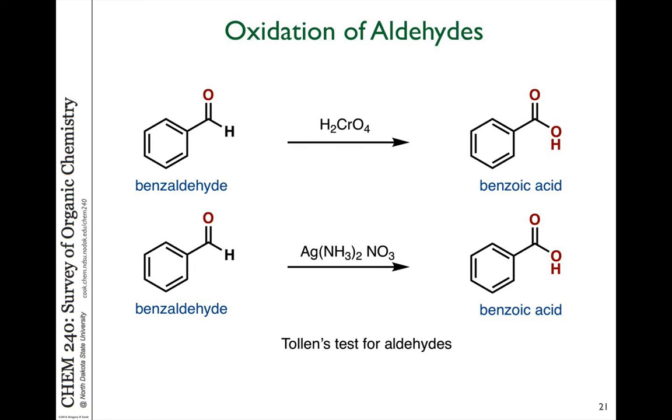Carbonyls can be oxidized also to the carboxylic acid. There are several things which can do that, one of those being chromic acid. For example, H2CrO4, this chromic acid will oxidize the hydrogen to an OH group and make benzoic acid from benzaldehyde. A very famous reaction uses silver salt to generate the carboxylic acid.